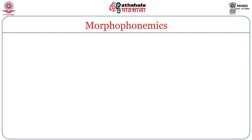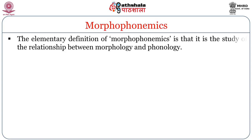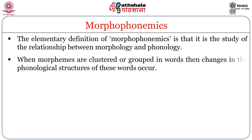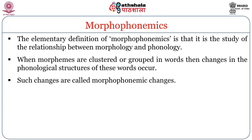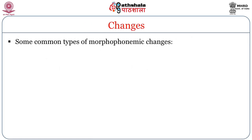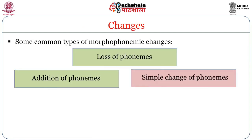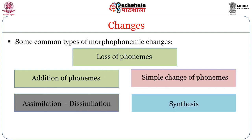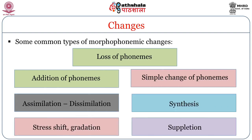Morphophonemics is the study of the relationship between morphology and phonology. When morphemes are clustered in words, changes in the phonological structure occur — these are called morphophonemic changes. Common types include: loss of phonemes, addition of phonemes, simple change of phonemes, assimilation and dissimilation, synthesis, stress shift and gradation, and suppletion.